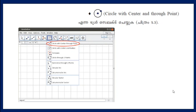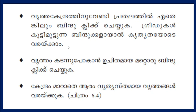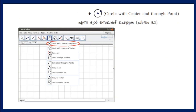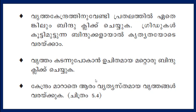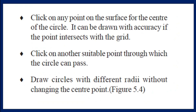We are going to use the 'Circle with Center and Through Point' tool. Click on any point on the surface for the center of the circle. It can be drawn with accuracy if the point intersects with the grid. Click on another suitable point through which the circle can pass. Draw circles with different radii without changing the center point.